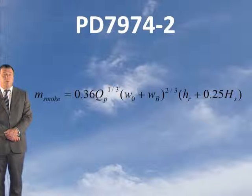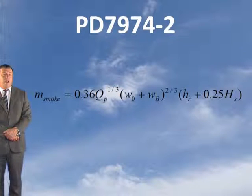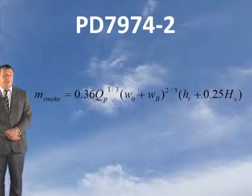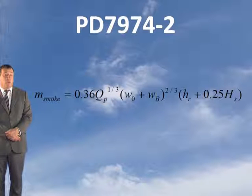Remember that WB should not be more than 1.5 metres, and the model also states that WB should not be more than W0, which is unlikely. If WB, the distance from the opening to the spill edge, is more than 1.5 metres, then it's normally recommended that there are channeling screens. Let's do an example using this model.